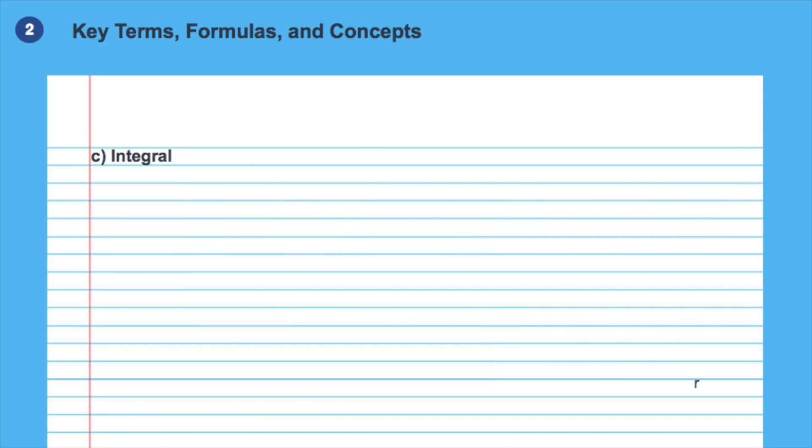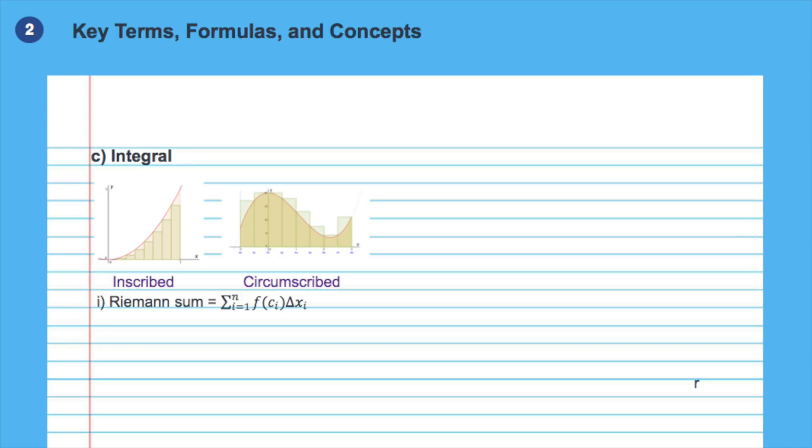Moving on to the integrals. One of the most important concepts is the Riemann sum. Riemann sum formula is used to find an area under the curve using rectangles. The main idea is as delta x, base of the rectangles, decreases, we come closer and closer to the actual area under the curve. Keep in mind that using inscribed versus circumscribed rectangles gives different results. Inscribed rectangles gives us an underestimation of the area, whereas circumscribed rectangles gives an overestimation of the area.